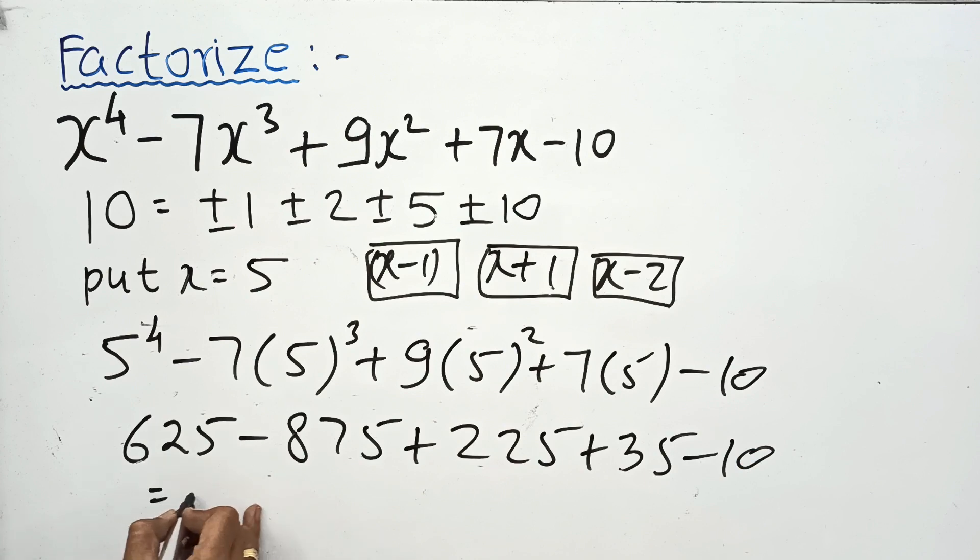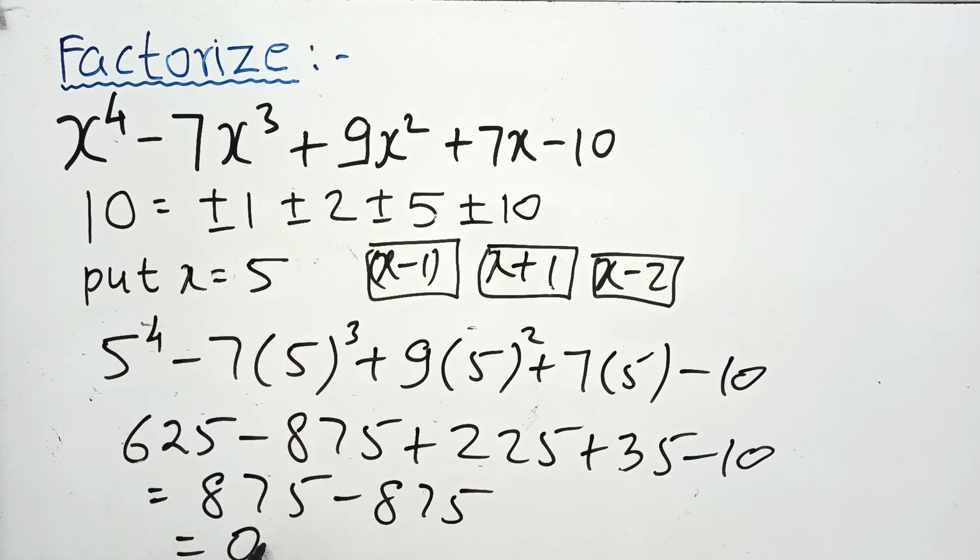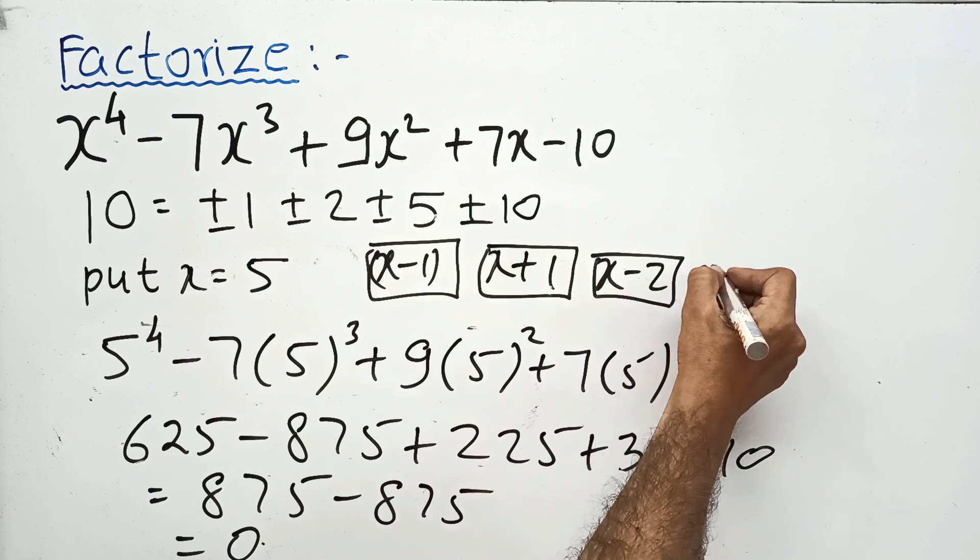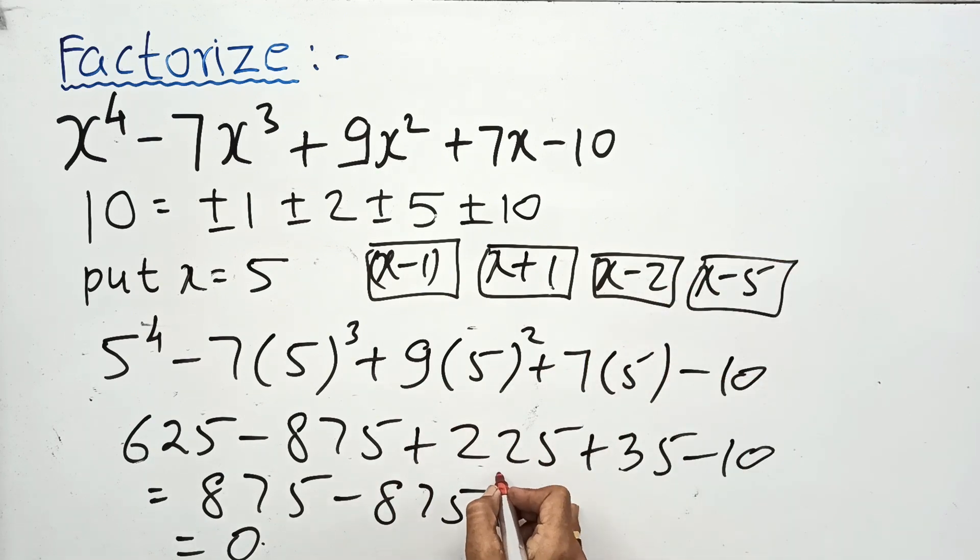By putting x equals 5, it comes to 875 minus 875 equals 0. Therefore, x minus 5 is another factor.